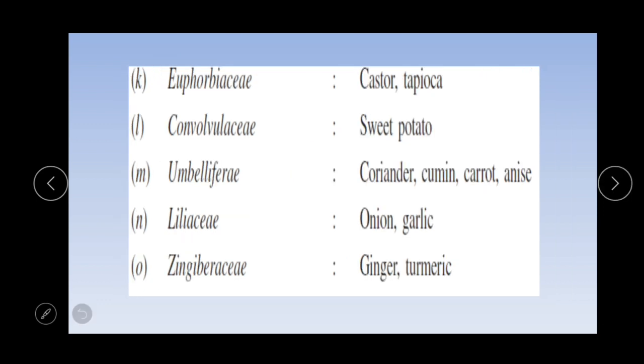Castor and tapioca belong to Euphorbiaceae. Sweet potato belongs to Convolvulaceae. Coriander, cumin, carrot, and anise belong to Umbelliferae family. Liliaceae family includes onion and garlic. Zingiberaceae family includes ginger and turmeric.